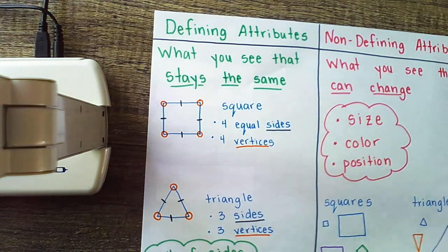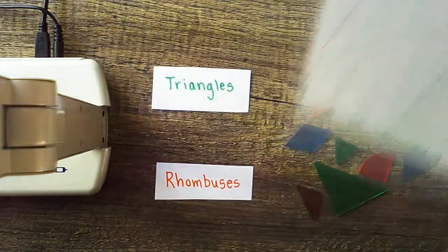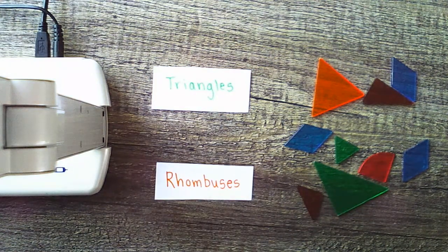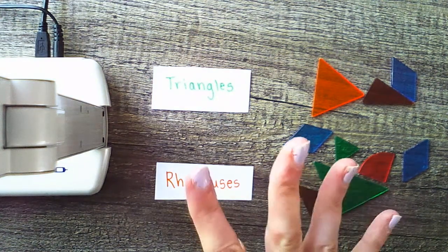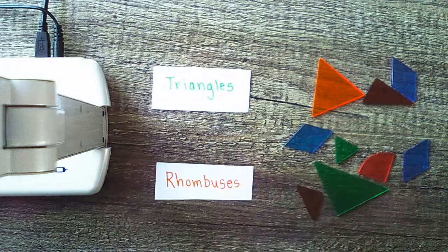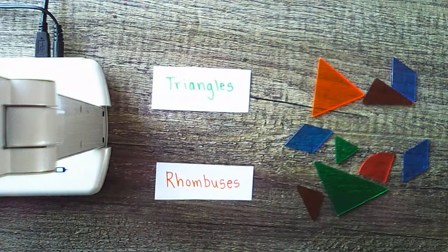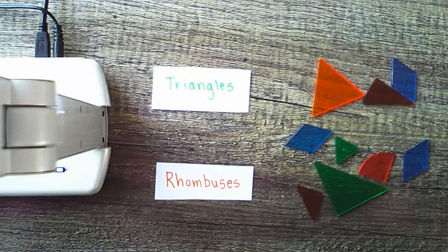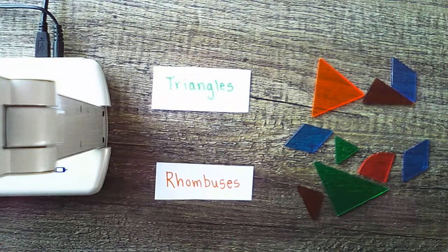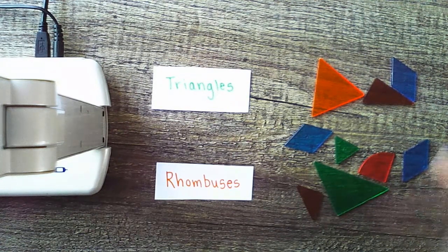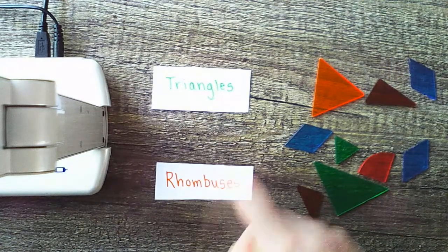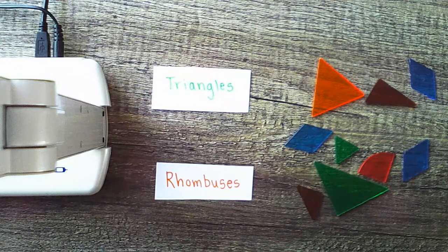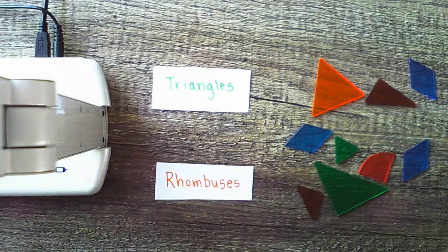And we're going to do that based on the shapes defining attributes. So we know that triangles are shapes that have three sides and three vertices, while a rhombus is a shape that has four sides and four vertices. Its sides are also equal, kind of like a square. But unlike a square, the sides are almost tilted like a diamond. So we're going to take a look at these shapes and see if they belong with triangles or rhombuses or neither at all, based on their defining attributes.